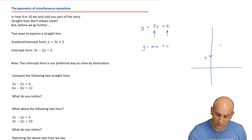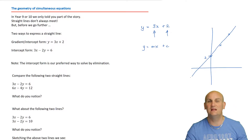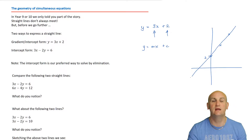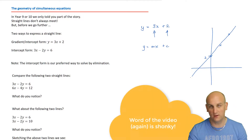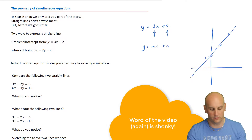So I'd go 1 across and 3 up and put a cross, 1 across and 3 up and put a cross, and join them together in a fairly shonky line - there we go, my straight line. That's one way of drawing a line.